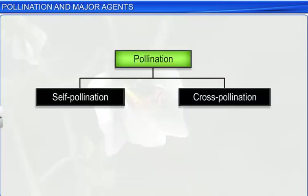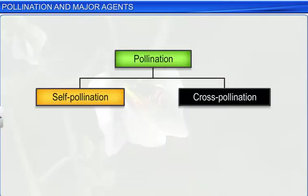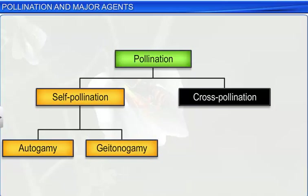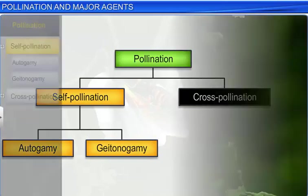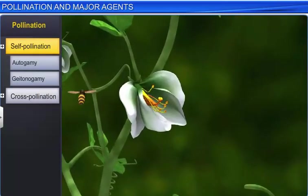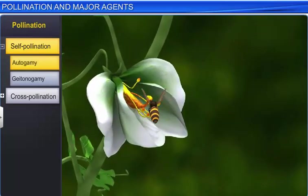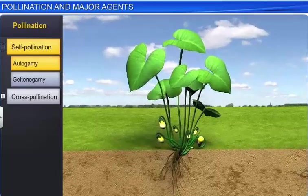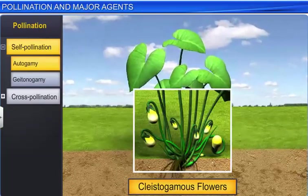In plants, self-pollination can occur either through Autogamy or Geitonogamy. In Autogamy, pollen is transferred from the anther to the stigma of the same flower, and is seen in cleistogamous flowers, or flowers which do not open at all.